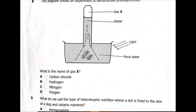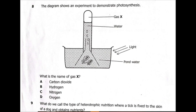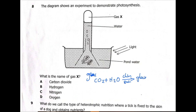Now let's move on to question 8. The diagram shows an experiment to demonstrate photosynthesis — we have a plant in pond water with light, and a gas is produced. Looking at the equation for photosynthesis: carbon dioxide plus water, with chlorophyll and sunlight, produces glucose plus oxygen. The gas expected after photosynthesis is oxygen. The answer is oxygen.